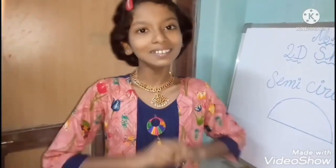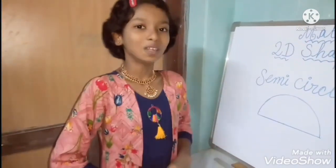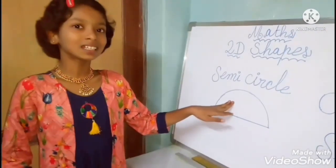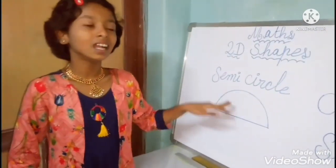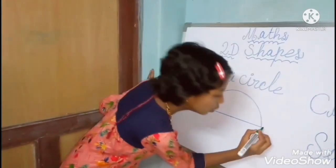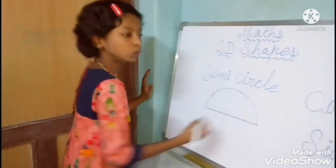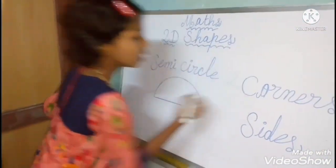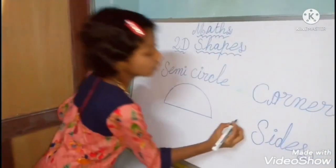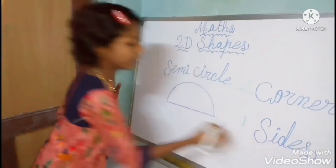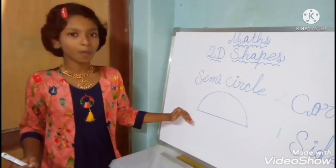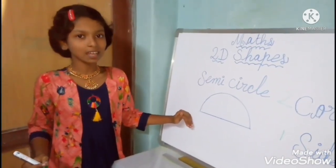Now I have drawn here one shape. This shape name is semi-circle. Semi-circle has two corners and only one side. And a semi-circle is the half part of the circle.